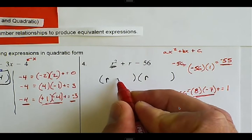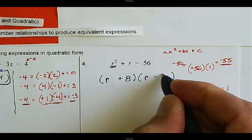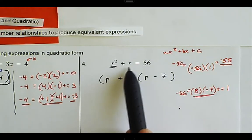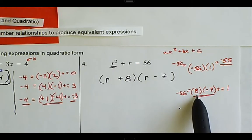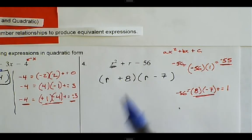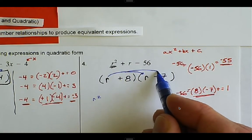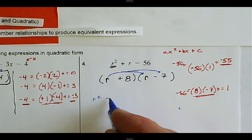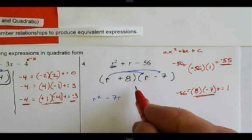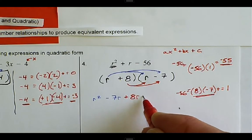So we substitute those values in — positive eight and minus seven. Because the middle term is positive one, the larger number needs to be positive; eight is bigger than seven, so eight is positive and seven is negative, leaving a positive result. Checking by distributing: r times r is r squared; r times negative seven is negative seven r; eight times r is positive eight r; and eight times negative seven is negative 56.